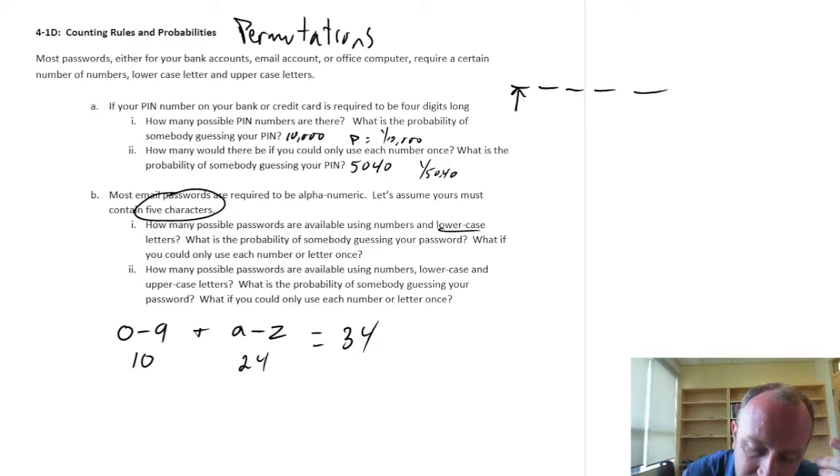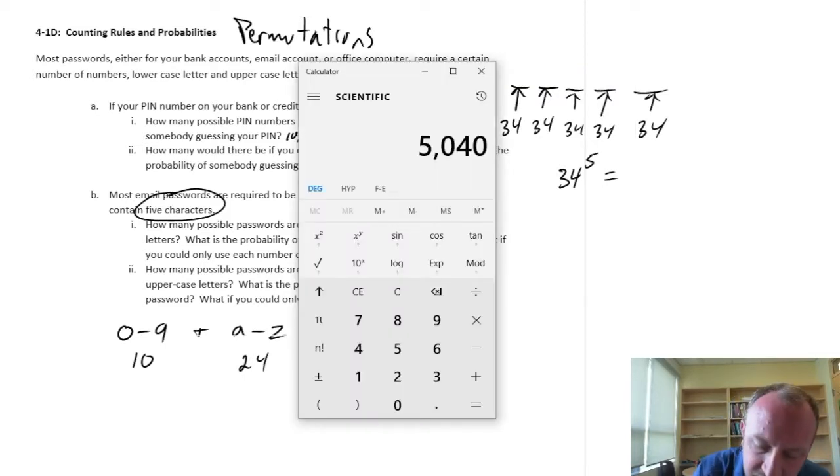For each one, if possibly, I'm probably guessing. So, I can reuse the password for the first one. Sorry, reuse the characters. So, at 34, 34, 34, in each of these. So, that's going to be 34 raised to the power of five. So, if I can reuse all of my values, 34 to the power of five. Wow, 52,521,875.